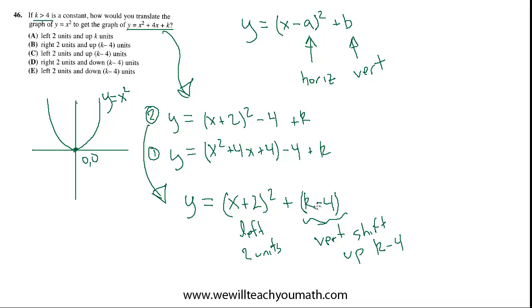If k were less than 4, then this would ultimately be negative, and it would be a downward shift. So, which one is left two units and up k minus 4 units? That's choice C.